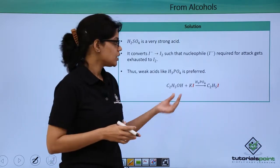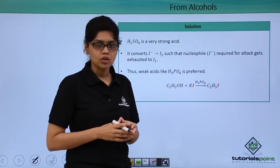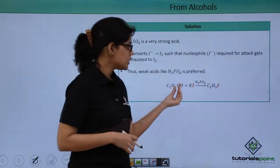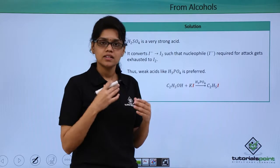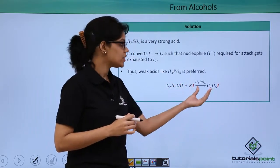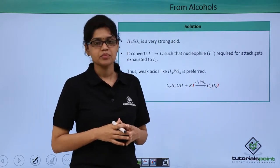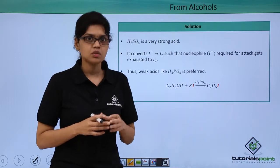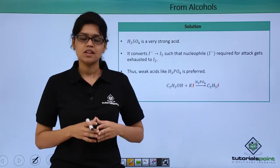For the same reason, in order to protonate this particular alcohol, we use weak acids like H3PO4 so that OH now gets converted to OH2. And at the same time, I minus can act as a nucleophile and attack this particular alcohol giving us corresponding alkyl halide. I hope you are very clear on why H2SO4 is not a suitable reagent to carry out this particular reaction. Thank you.